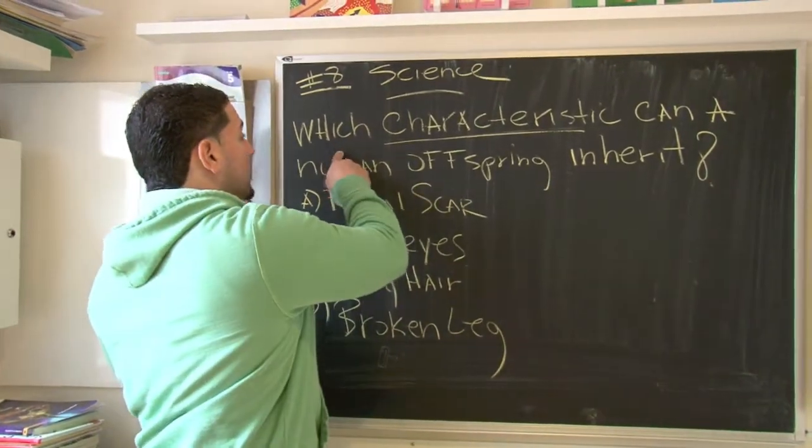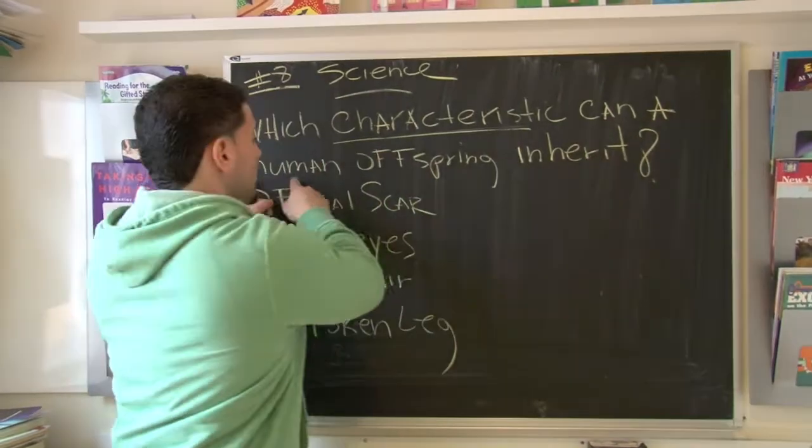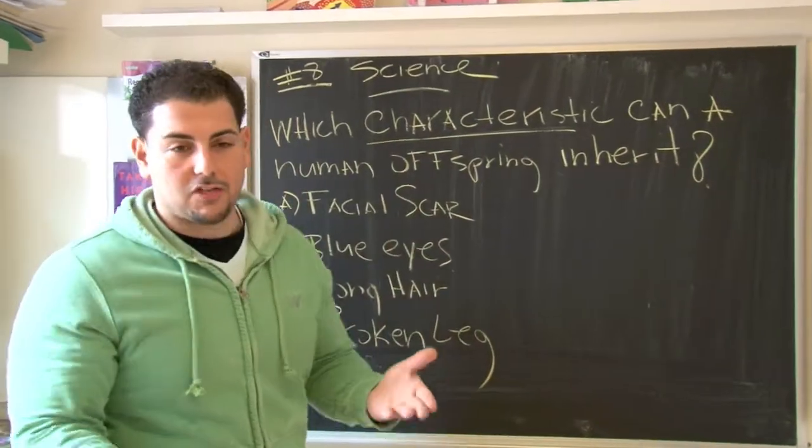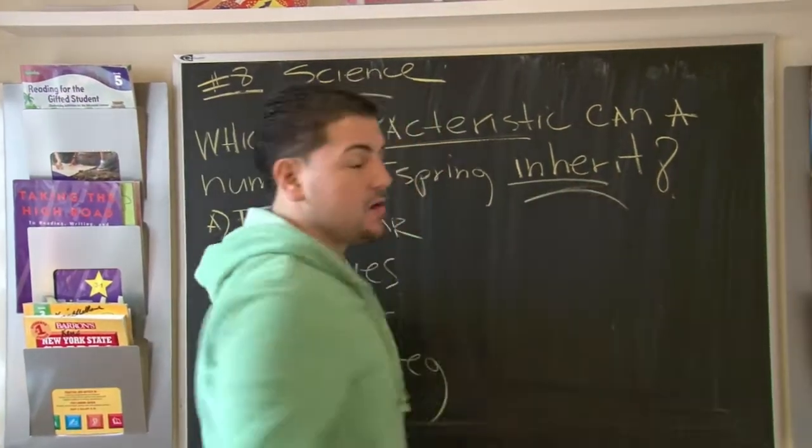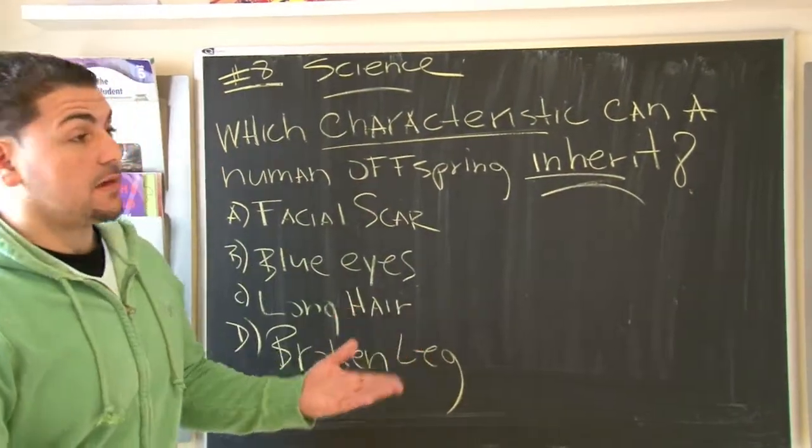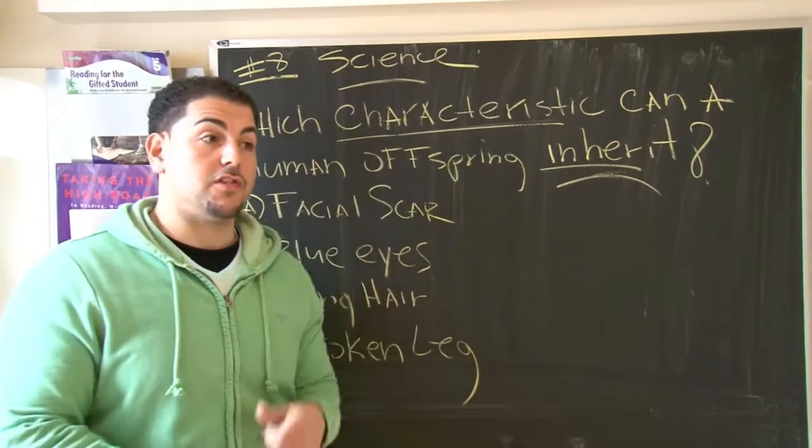What the question is asking us is which characteristic can a human offspring, all they really mean is you, as a human, inherit. Now, how do you inherit something? You inherit something when mom and dad come together to make you.